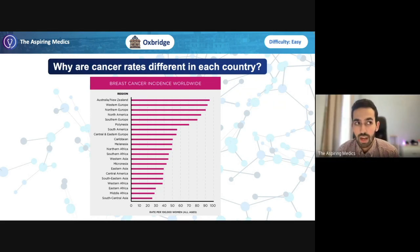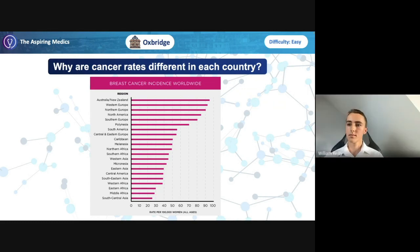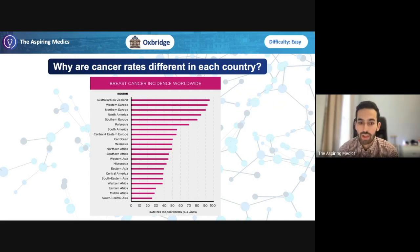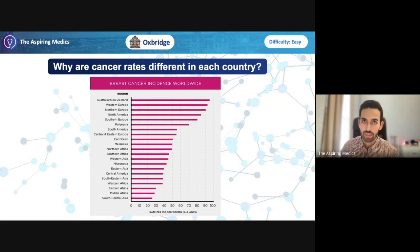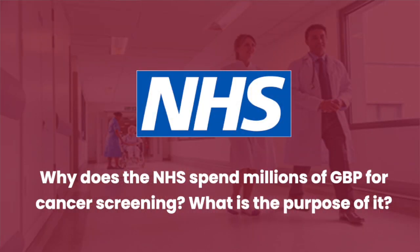That's an interesting hypothesis — you're thinking about the number of children each woman could have, the effect on interrupted periods during pregnancy, hormonal changes and how that could potentially affect cancer. Really good. Now thinking more globally about screening — why does the NHS spend so many millions of pounds each year on cancer screening, and what's the purpose of it?